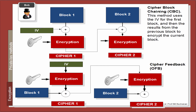Another method we can use is cipher feedback, or CFB. With this, we take the initialization vector and encrypt it with the key, then exclusive-OR it with the first plain text block to produce our first cipher block. We then take that output, feed it into the next stage, encrypt with the key again, and exclusive-OR that output with the second plain text block to get the second cipher text.